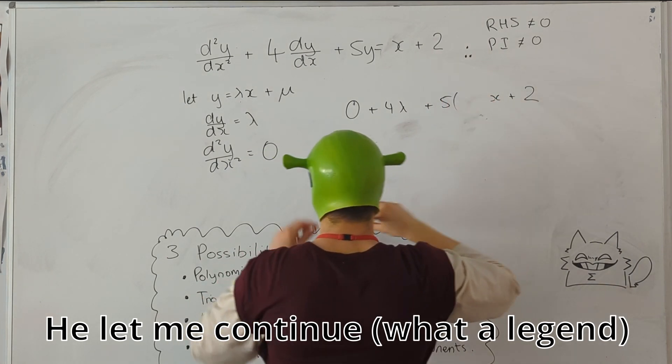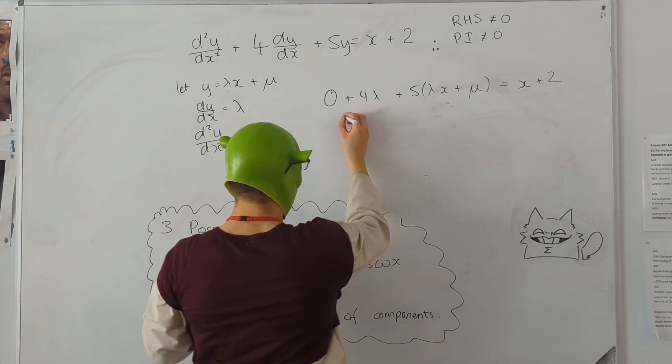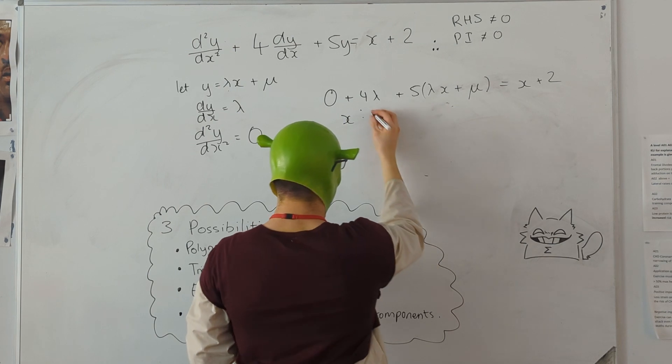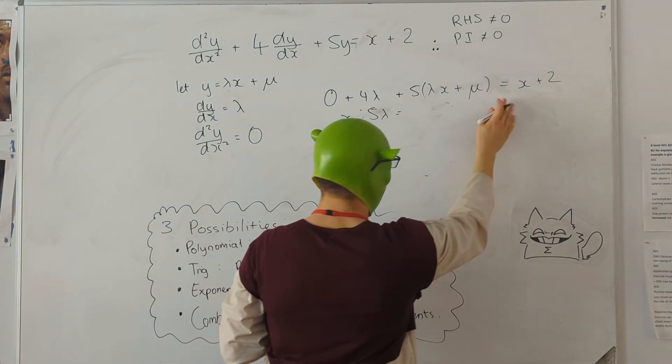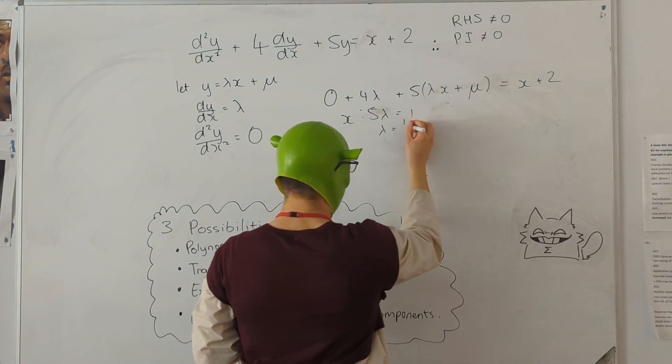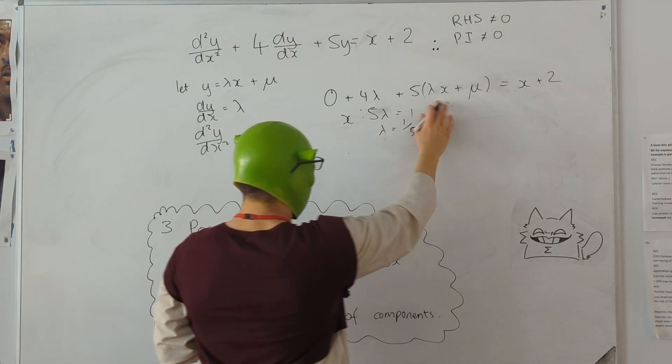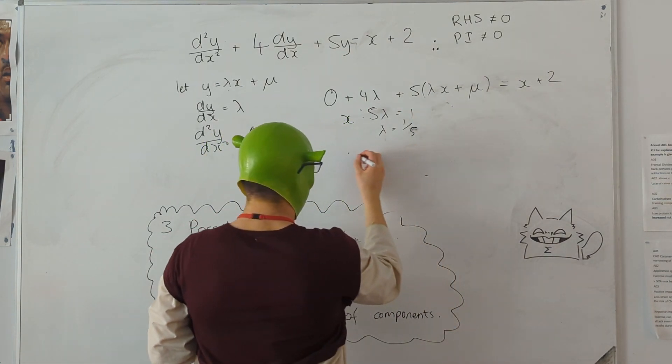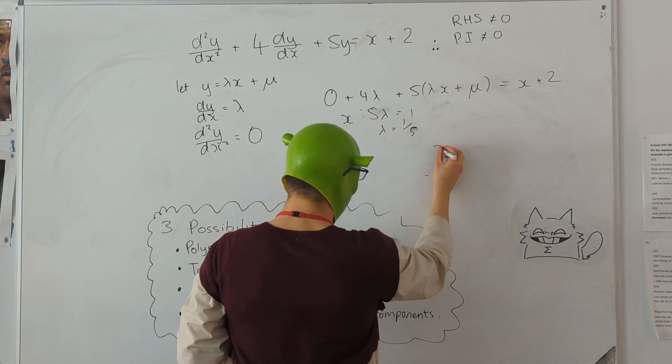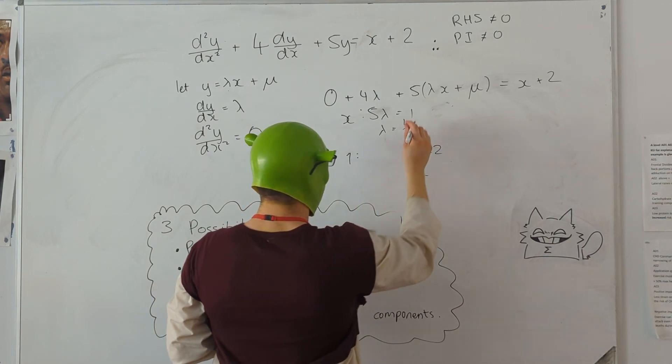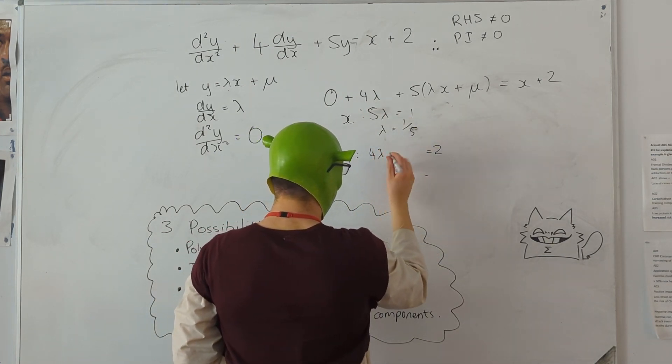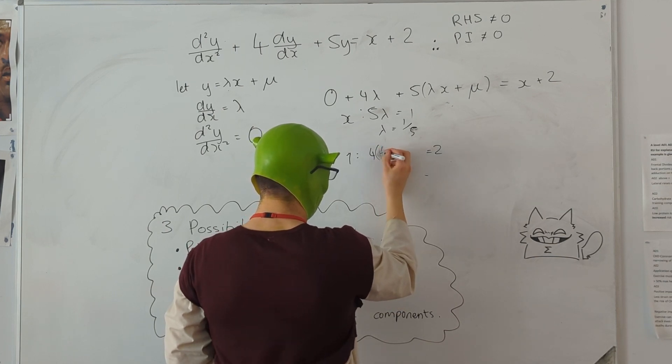That's meant to be a y. So now that we've passed that, we know we can compare coefficients. So five lambda equals one. So lambda equals one over five. I'll take a six.